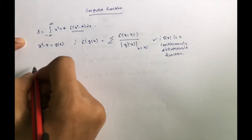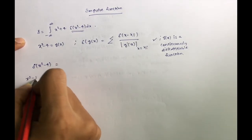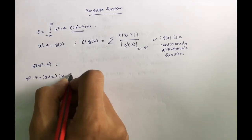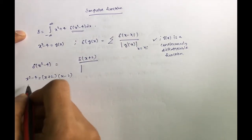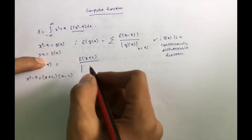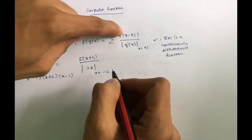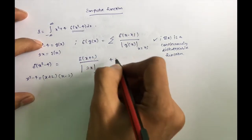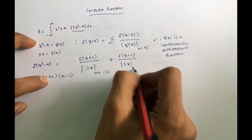Since x² - 4 is a quadratic equation, it is continuously differentiable. We can factor x² - 4 as (x + 2)(x - 2). So δ(x² - 4) = δ(x + 2) / |g'(x)| at x = -2, plus δ(x - 2) / |g'(x)| at x = 2. Here g'(x) = 2x, so at x = -2 we get 2(-2) = -4, and at x = 2 we get 2(2) = 4.